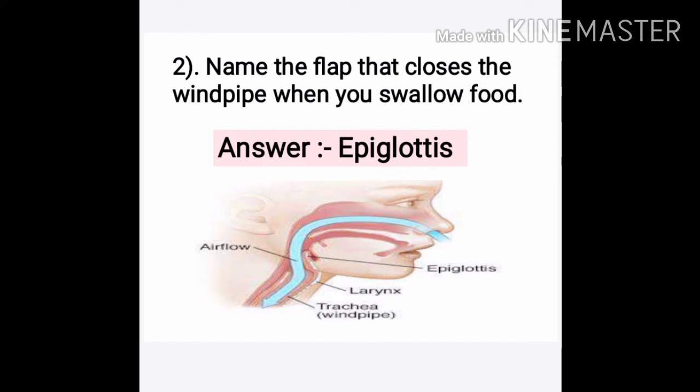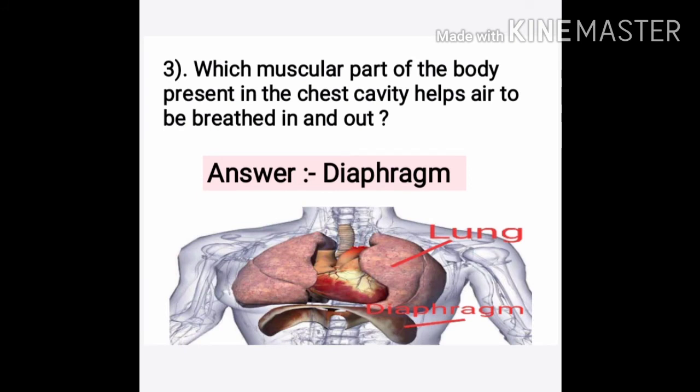One word answer, question two: Name the flap that closes the wind pipe when you swallow food. That cartilaginous flap-like structure which closes the wind pipe when you eat or drink is called Epiglottis.